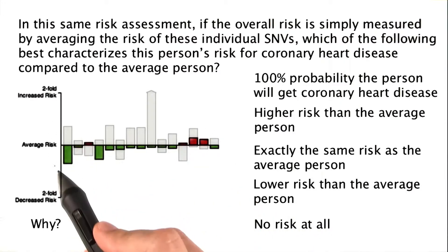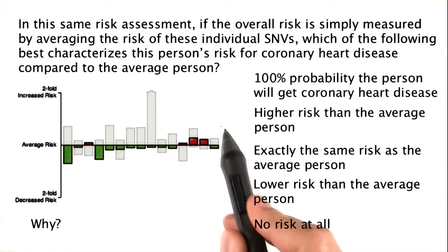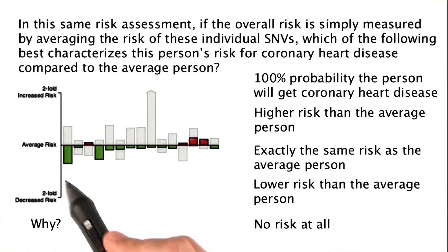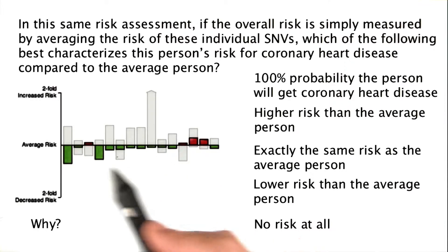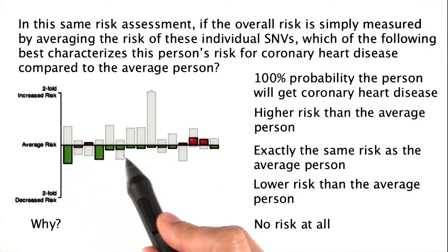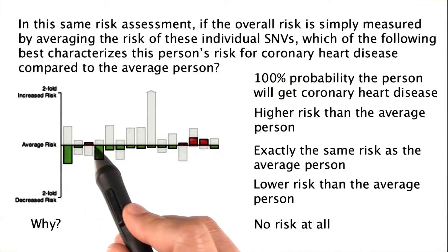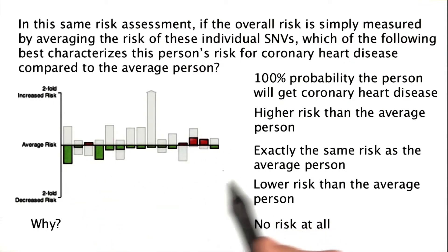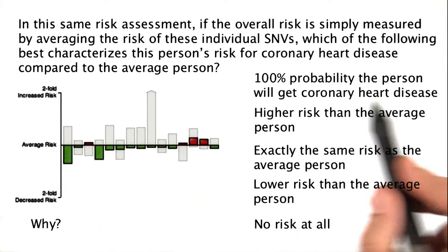We're not given any numbers, but just look at the risk shown in the graph here. Green represents a lower risk, red represents a higher risk. How would you assess their risk here?